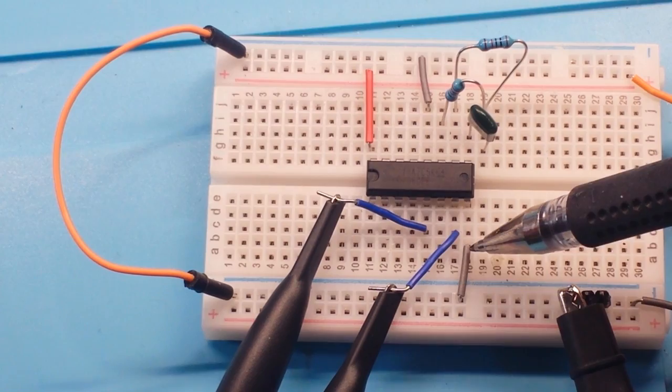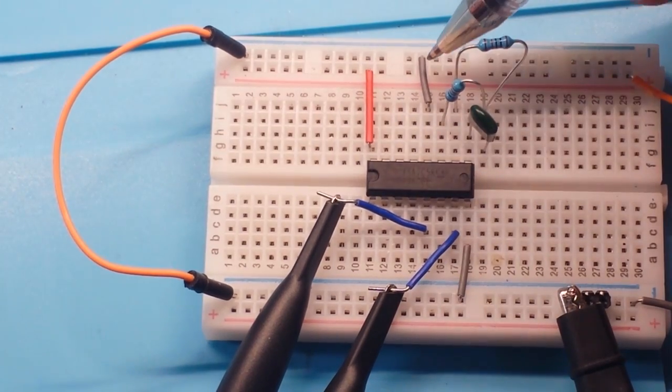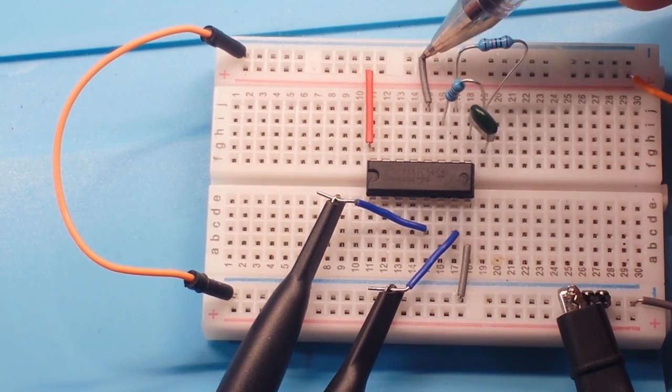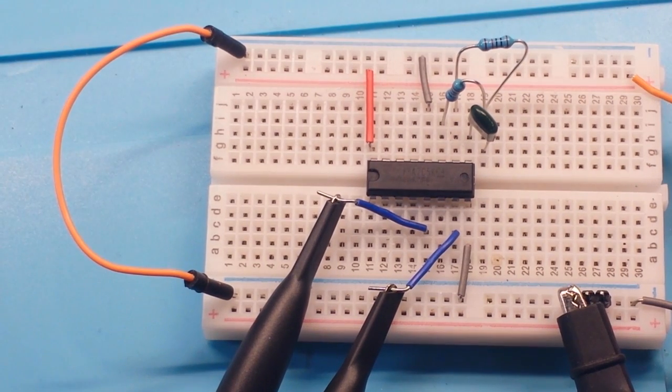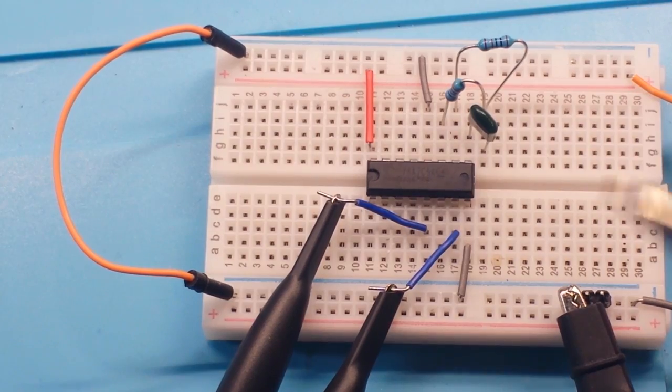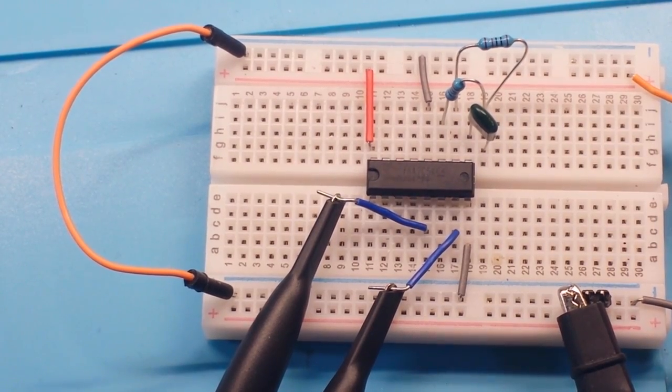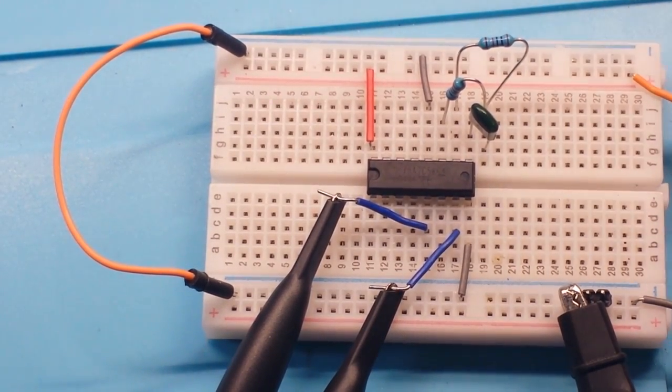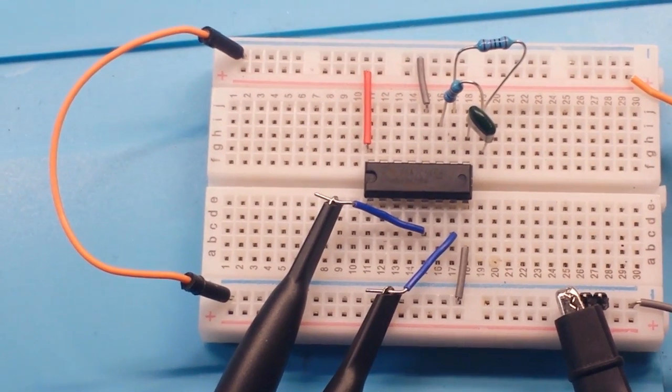VCC is on pin 16. Ground is on pin 8. And the reset pin needs to be held to ground, otherwise the chip will live in a reset state. That's on pin 12. So here we go. I have it running. Let's have a look at it on the scope.